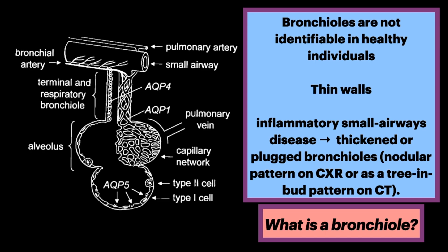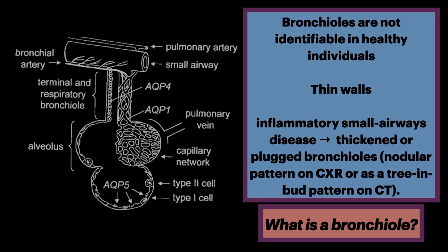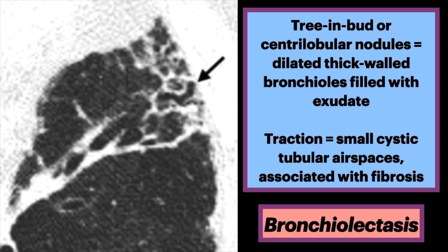In inflammatory small airways disease, however, thickened or plugged bronchioles may be seen as a nodular pattern on a chest radiograph or as a tree-and-bud pattern on CT scans. On CT, when dilated bronchioles are filled with exudate and are thick-walled, they are visible as a tree-and-bud pattern or as central ovular nodules.